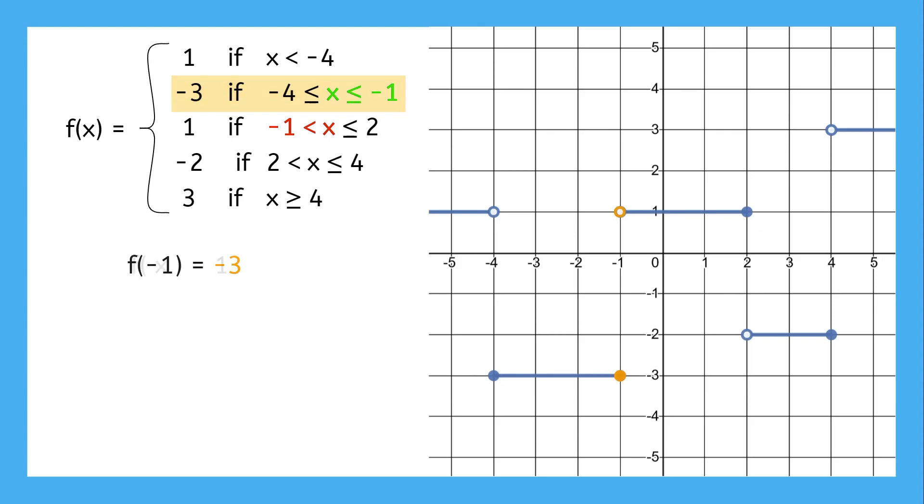We could also mix it up and ask what input gives a specific output. What inputs here give an output of 1? Well, according to the function, there are two different intervals that give outputs of 1, so any inputs that are on those intervals are fair game. The graph shows the same. Two separate intervals full of points where the output is 1.